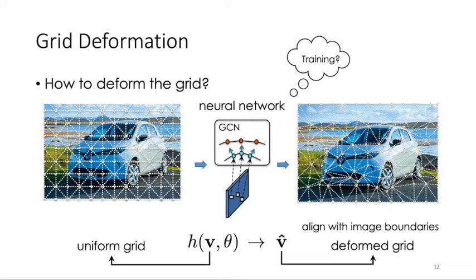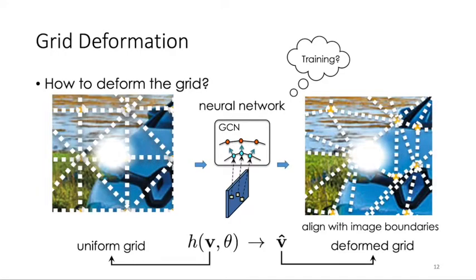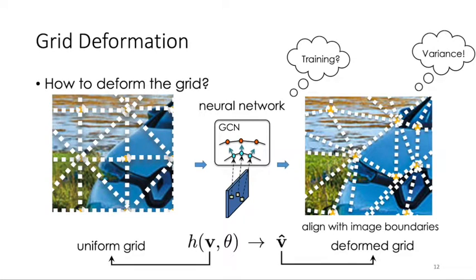But how do we train the network? Our main intuition is that when the grid edge is aligned with image boundaries, the variance of features of pixels inside each grid will be minimized. Like in this case, the variance of RGB colors is minimized for each grid cell.